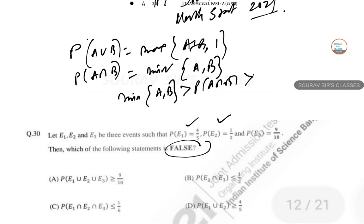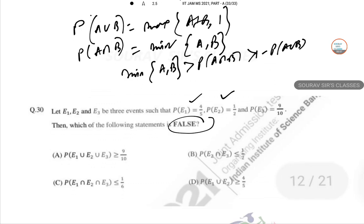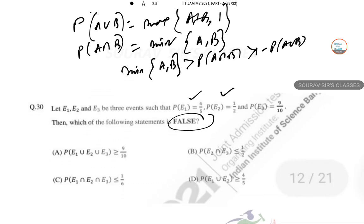As a result, E₁ union E₂, this is true. This is also true. In this part, this is 9 by 10, this is also true, and this is only false. So our answer is C.